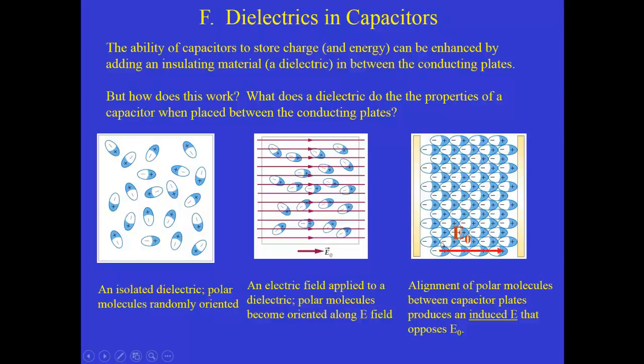Now what does that do? The applied field was to the right, that's the E0. But notice this layer of positive charge on the right side of the dielectric and the negative charge on the left side, that produces a field pointing opposite to the externally applied field. And so we call that the induced field and it lines up to oppose the applied field.